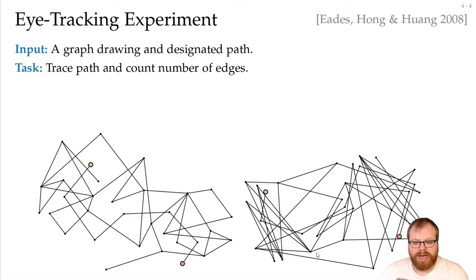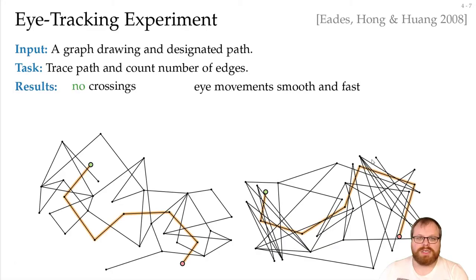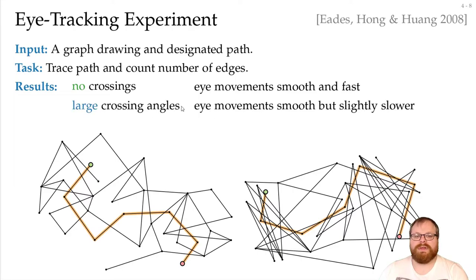But in this example here it's much harder. And here the path has many crossings, but it's not only the number of crossings that we have. The results that they found was, if we have no crossings on the path, then the eye movements are smooth and fast. If we have large crossing angles, then the eye movements are still smooth, but are slightly slower.